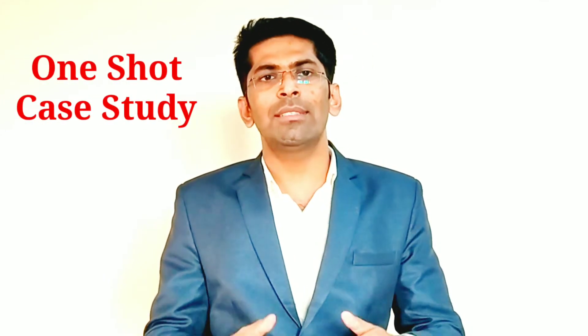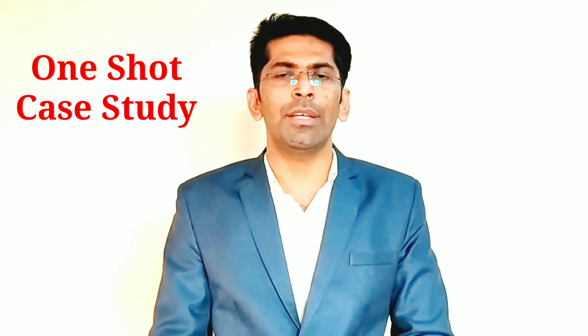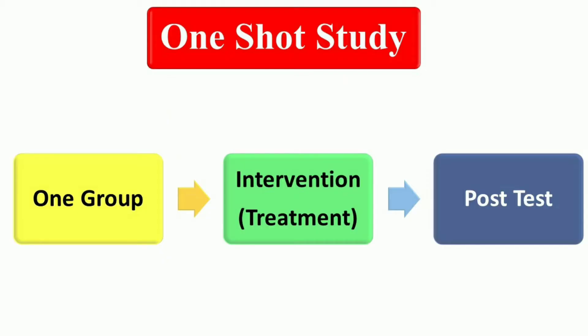In the one-shot case study pre-experimental research design, a single experimental group is exposed to a treatment and then observations are made after the implementation of that treatment. It is studied at a single point in time after some treatment that is presumed to be the cause of change. No control or comparison group is present and no pre-test is conducted. Only one dependent variable, group, or individual is considered.